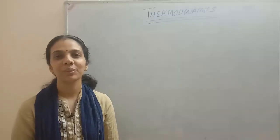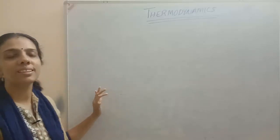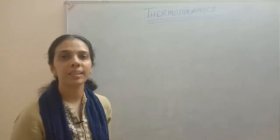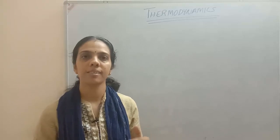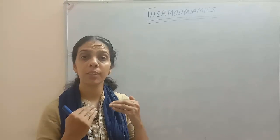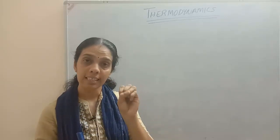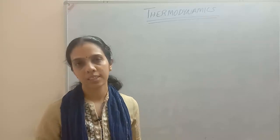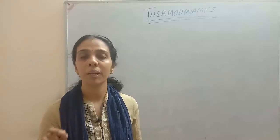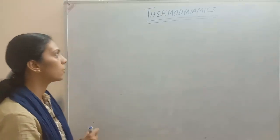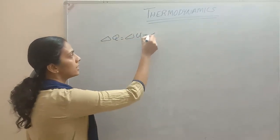Hello, welcome back to Learn Physics. In today's topic, we are continuing with Thermodynamics. In last class, we learned the first law of thermodynamics: delta Q equals the amount of heat energy given to the system, which is divided into internal energy and work done. It is delta Q equals delta U plus delta W.